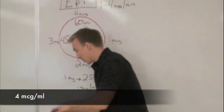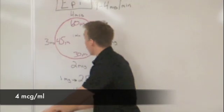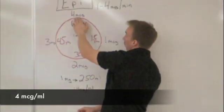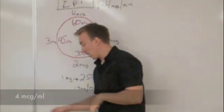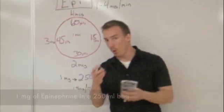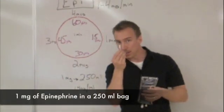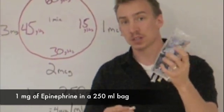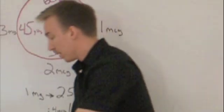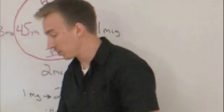Our epinephrine drips are set up on concentrations of four micrograms per milliliter. How we get there, we take one milligram of epinephrine and place that in a 250 cc bag. Before we do that, let's talk a little bit about dosing this.